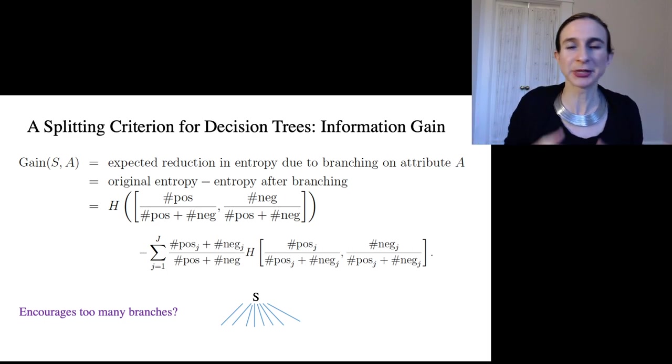Then information gain would be super happy. This would be the best possible value for information gain. But it would split way too much and just overfit because now you have each data point in its own leaf, which is not what you want.